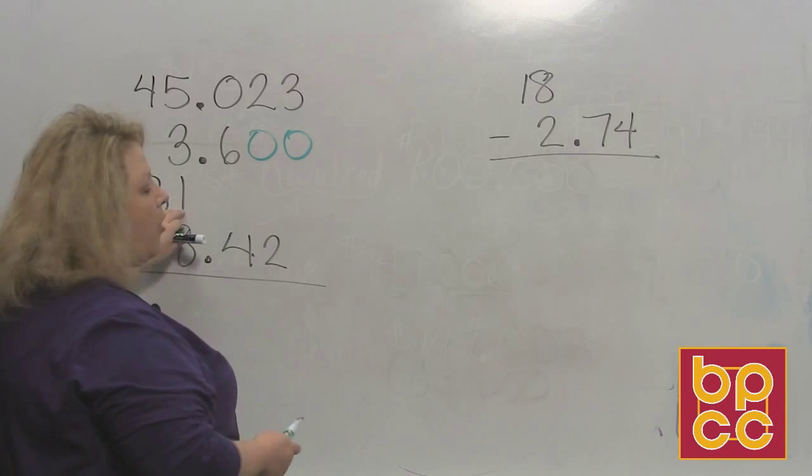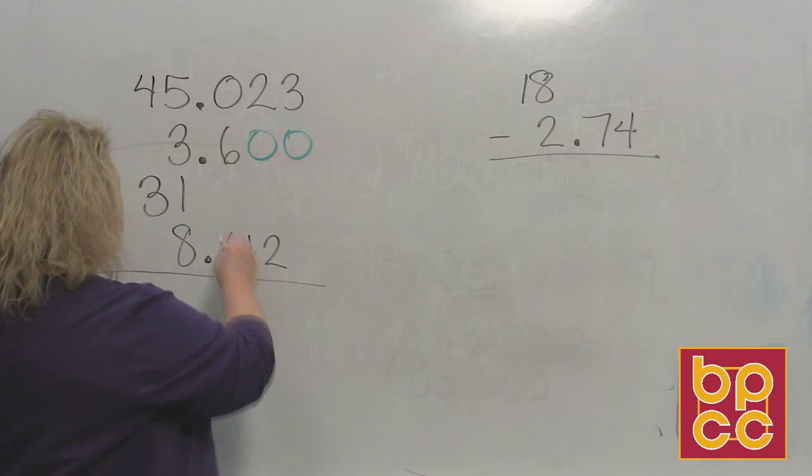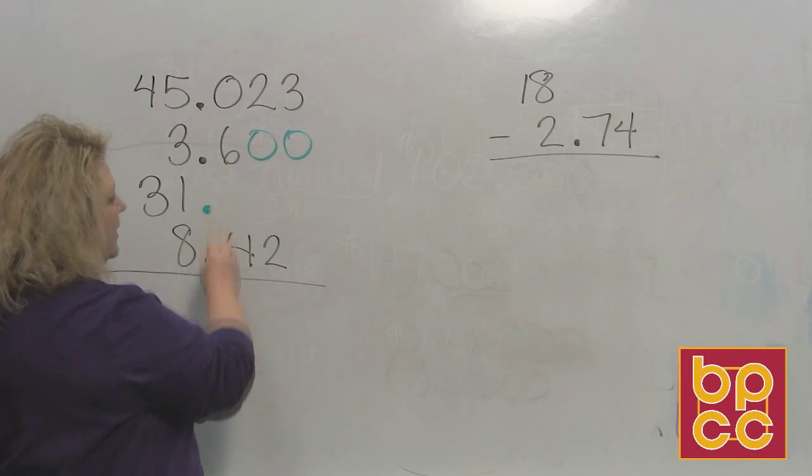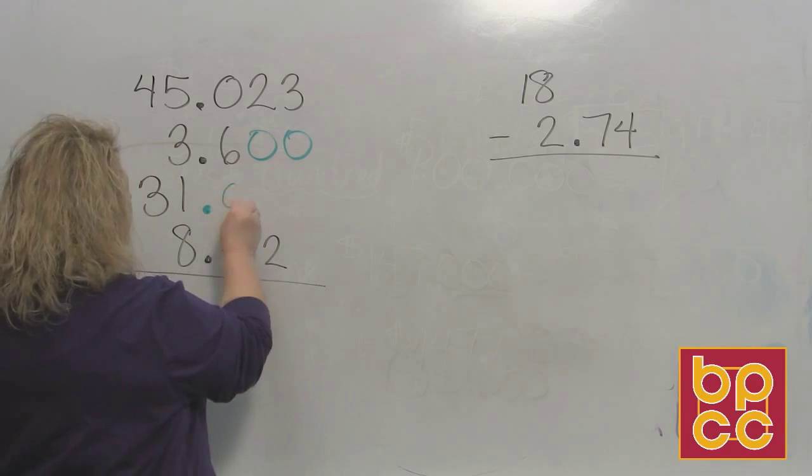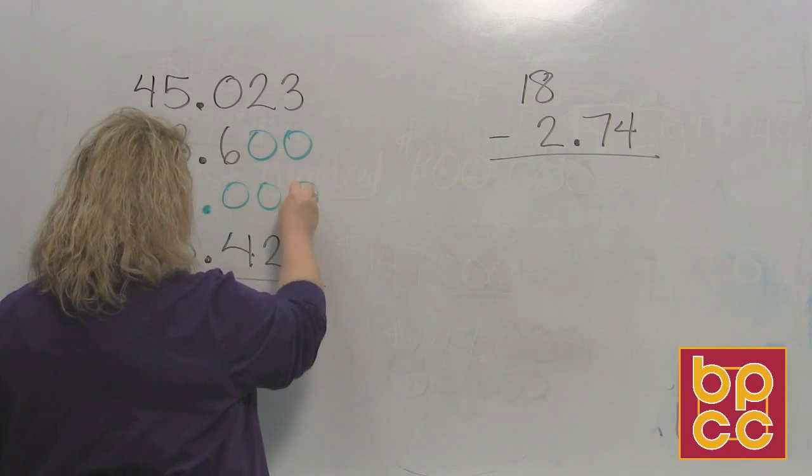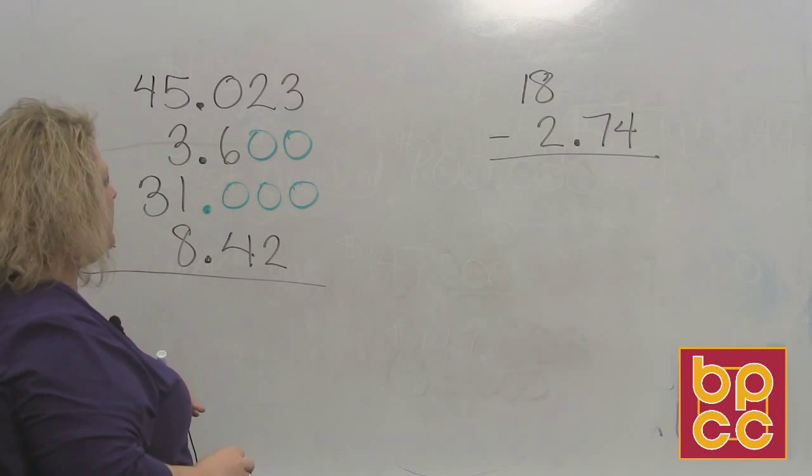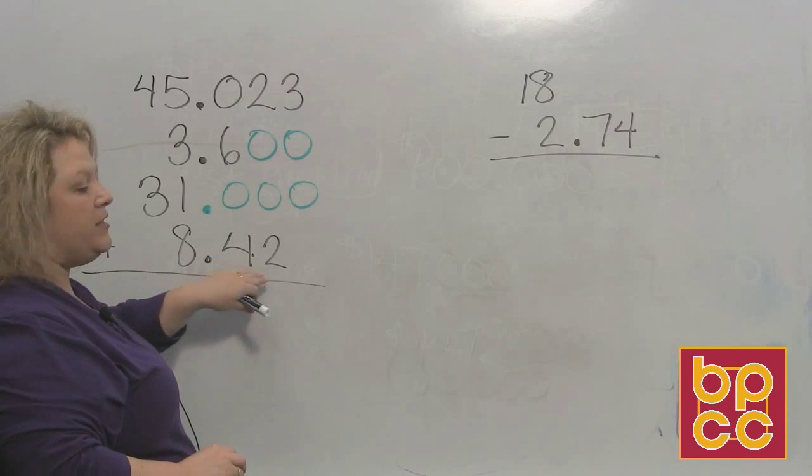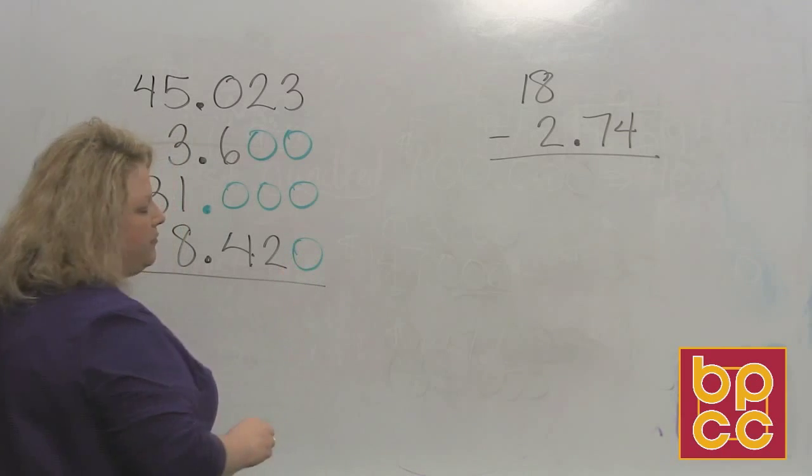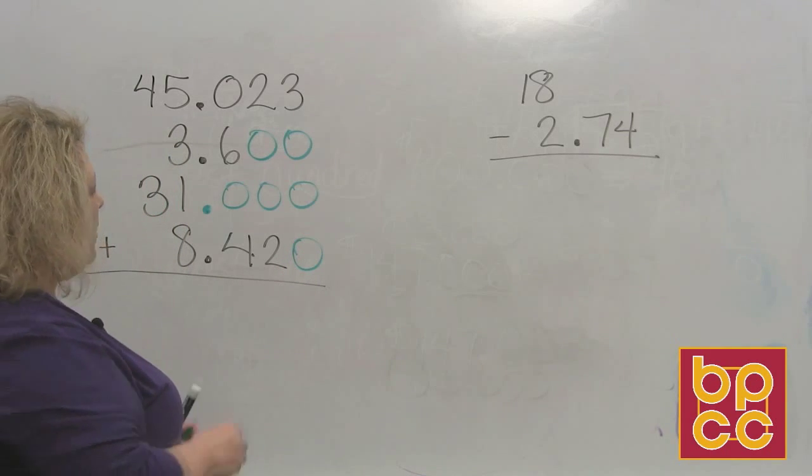This next number is the whole number thirty one. And like I just got through saying, all whole numbers have an understood decimal at the end. So once you put that decimal there, you can put your three zeros for placeholders just so that you make sure everything stays lined up. And then the last one, you have eight and forty two hundredths. But we can add that extra zero in just for placeholders.